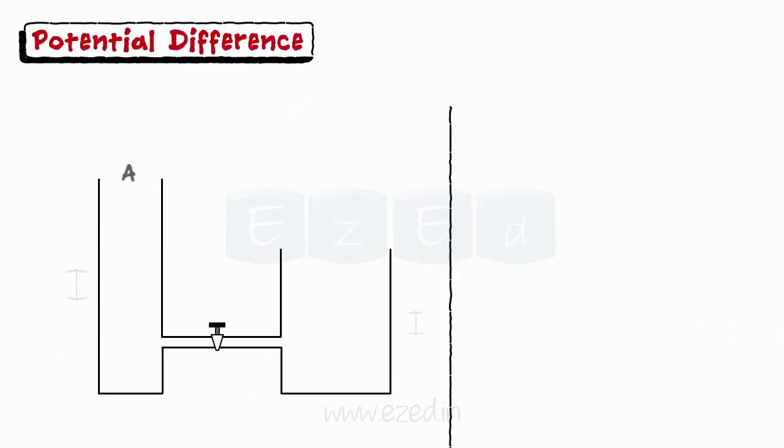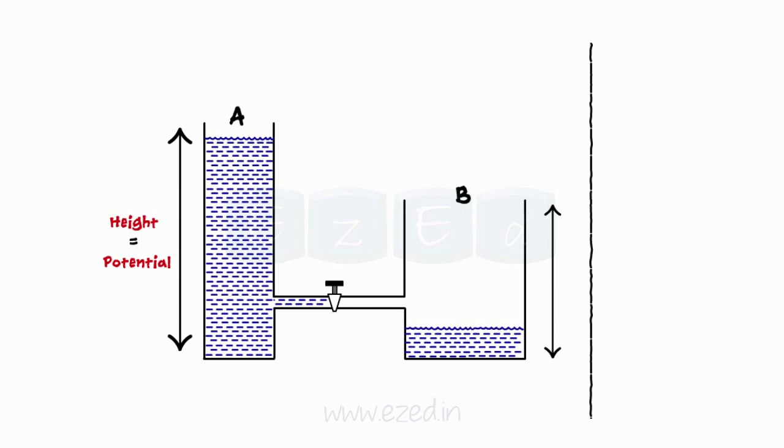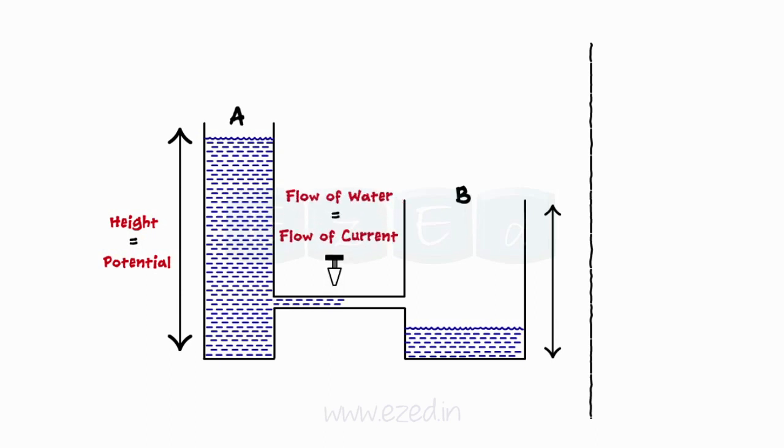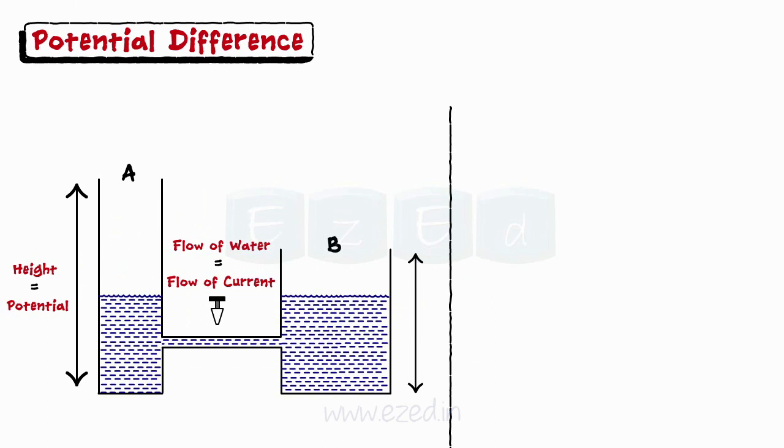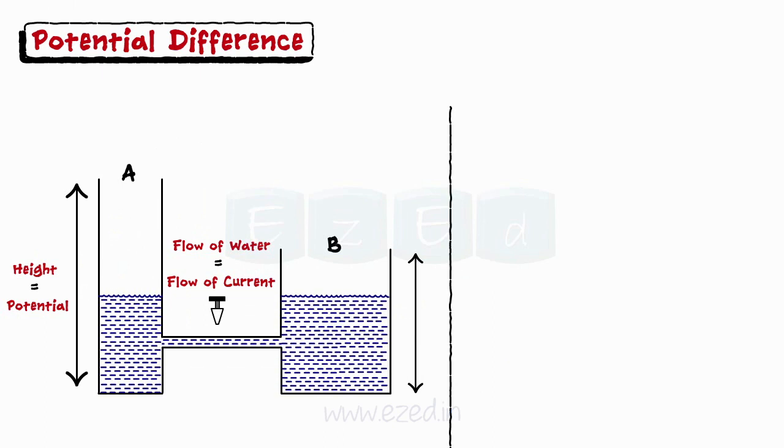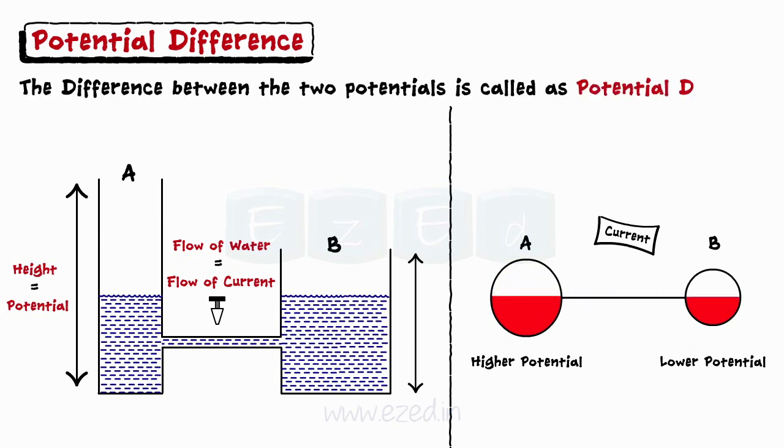Let's connect the two tanks A and B, which are at different heights and have different water levels. As soon as we open the valve, the water starts to flow from tank A to tank B, till the water level of the two tanks becomes equal. In a similar way, whenever the two charged bodies are connected to each other, the current starts to flow from the higher potential body to the lower potential body, till the charge on both the bodies becomes equal. The difference between the two potentials is called as potential difference, sometimes referred to as voltage.